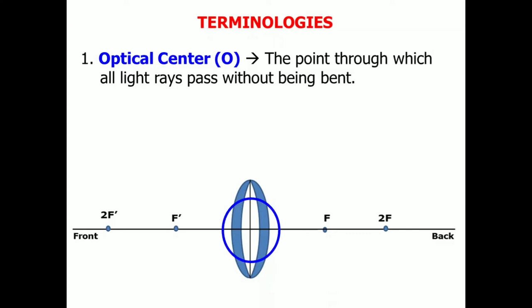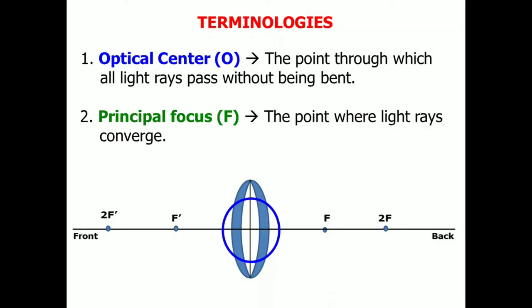The second term, or concept, is the principal focus, which is represented by a capital F. This is the point where light rays converge. If you can see, we have two Fs. Here, and here. Because usually, we are using bi-convex lenses.